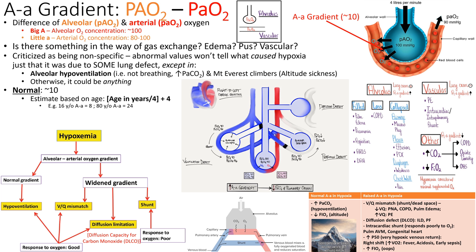The A-a gradient is really only useful to determine if someone has lung disease or not — pneumonia, PE, pneumothorax. You calculate the alveolar PO2, measure the arterial PO2 from the ABG, and look at the difference. Normal is about 10, but it's age-based. The formula — same as ET tube sizing — is age in years divided by 4, plus 4. For an 80-year-old: 80 ÷ 4 = 20, plus 4 = 24.